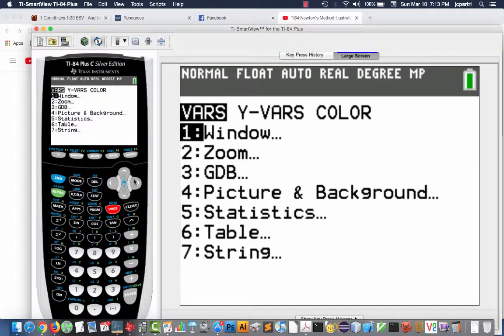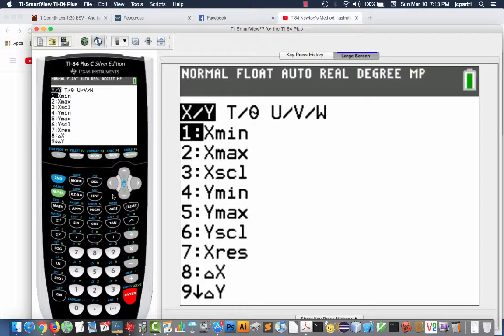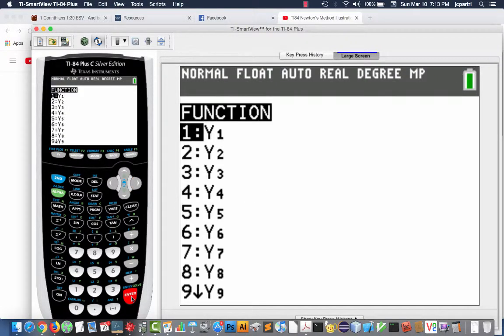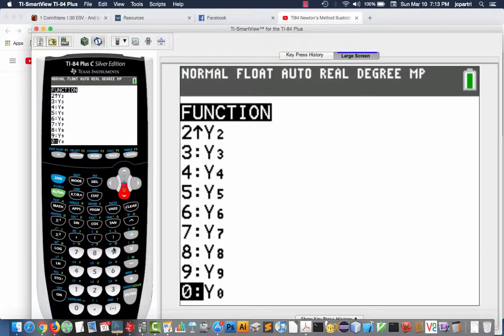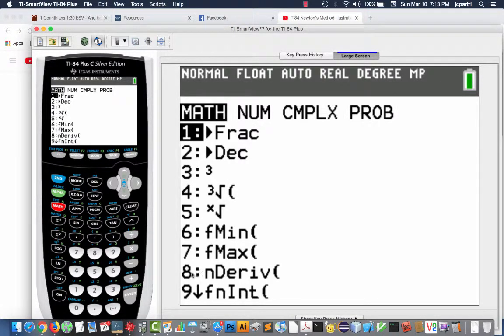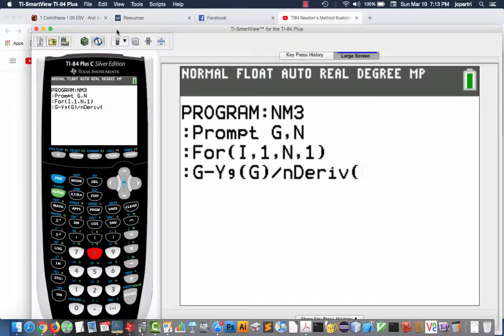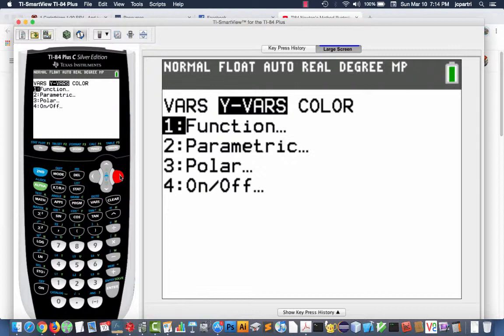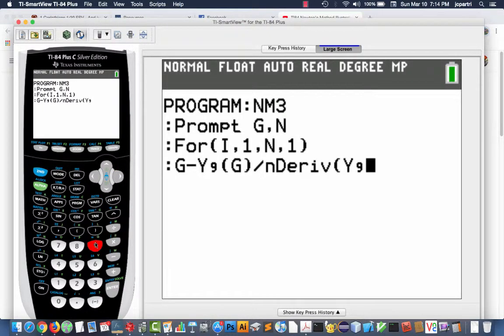And so, VARS, YVARS, stay on this category. I'm sorry, I apologize. VARS, YVARS, which is right here. Choose the function option. Y9, which I don't really have to scroll down. I could have just typed the 9 and it would have gone straight to that. Y9 of what? Y9 of the guess. So, back to alpha and then G, close parenthesis, divided by the derivative.